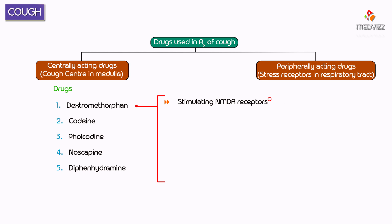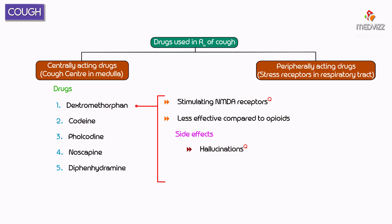Dextromethorphan acts by stimulating the NMDA receptors — this is a very important point. It is less effective than opioids but with lesser side effects. Opioids have a lot of side effects, but dextromethorphan has fewer side effects. Side effects of dextromethorphan include hallucination, and addiction has been reported with it.